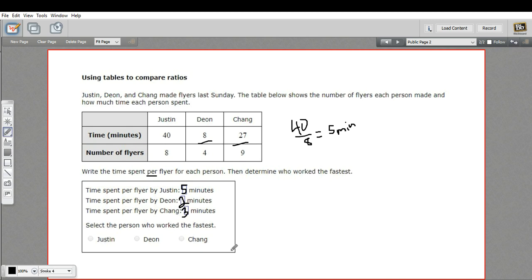So then it says, select the person who worked the fastest. And that would definitely be Dion because he only took two minutes per flyer. So that is how to use a table of data to compare ratios.